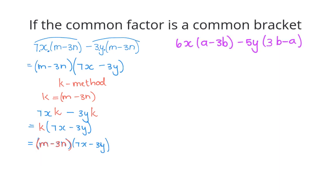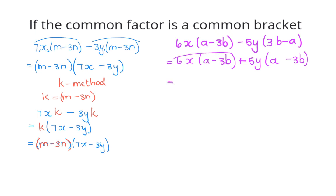In the second example the terms in the brackets are similar but the signs are different, and we want to swap the signs of the terms. So what we're going to do is take out minus 1 out of one of the brackets. Taking out minus 1 from the second bracket: minus 5 times minus 1 changes to plus 5y, and the signs in the bracket change — plus 3b changes to minus 3b, and minus a changes to plus a. Now in this two-term expression, a minus 3b is the common factor and the inside of the brackets are exactly the same. The second factor is 6x plus 5y.